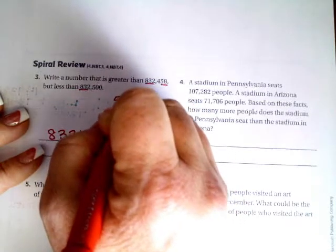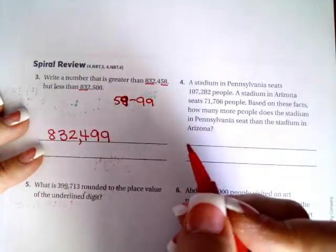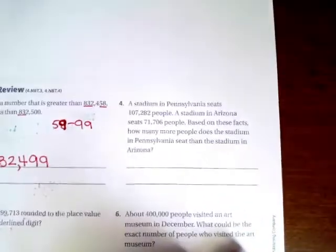You can pick any number that is between 59 and 99 there. You got to choose one that's bigger than 58. So 59 and 99, that's a lot of numbers to choose from guys.